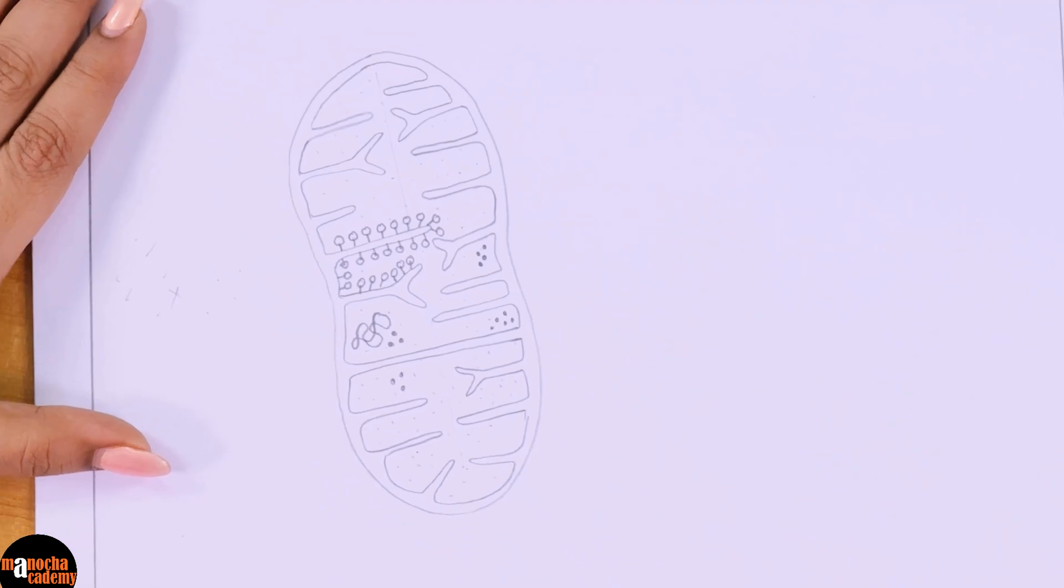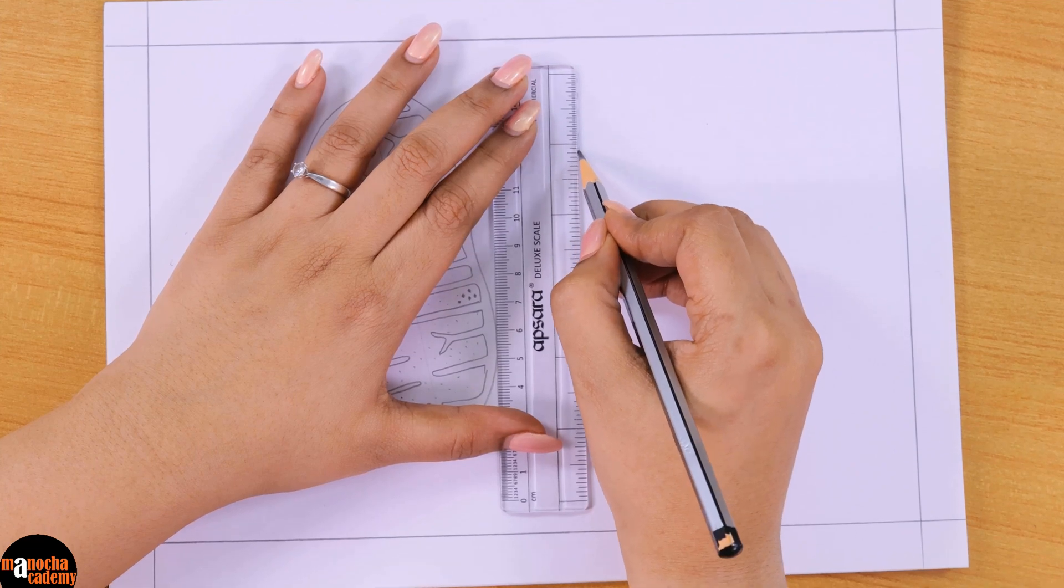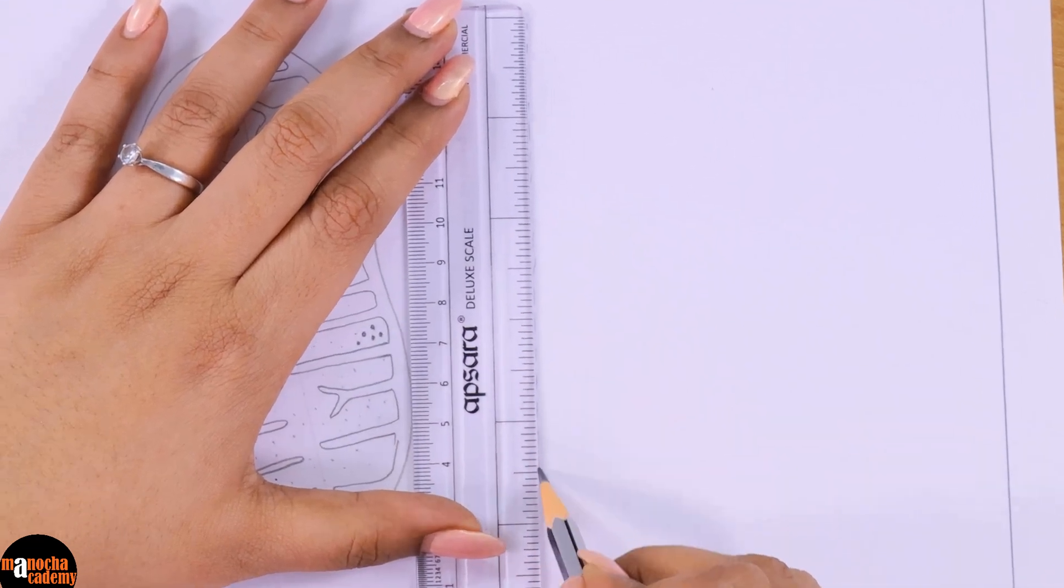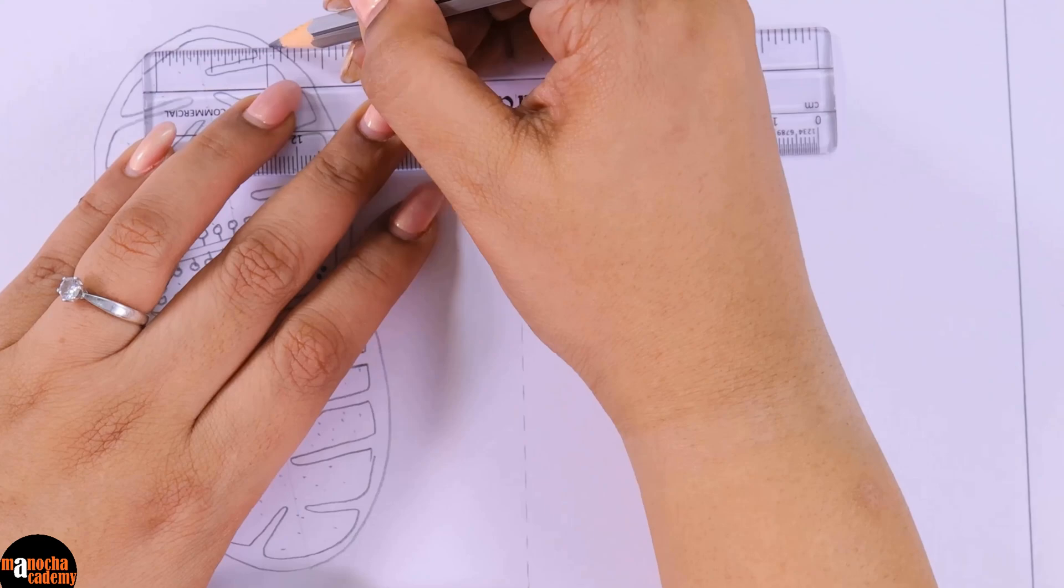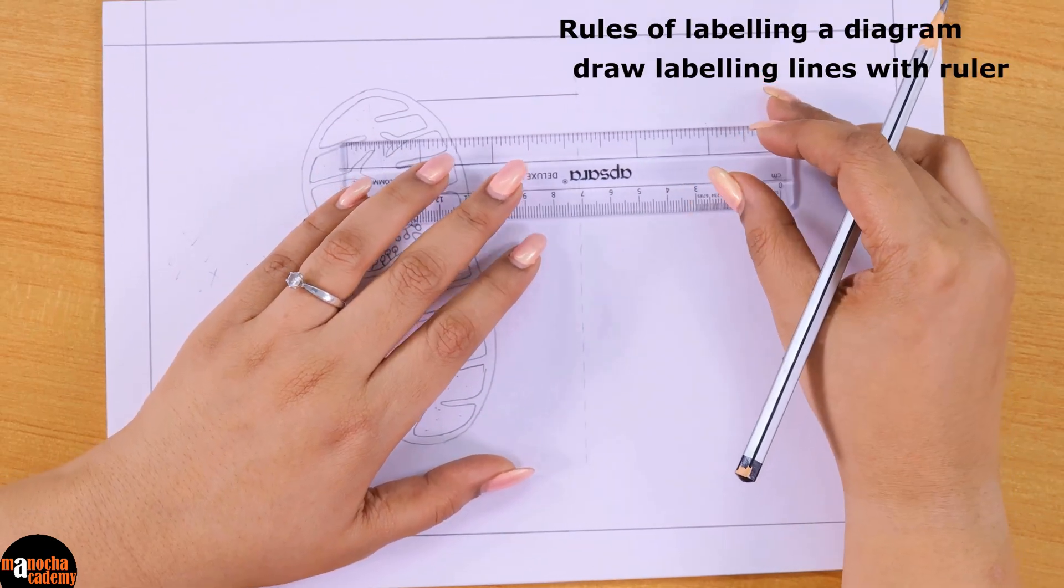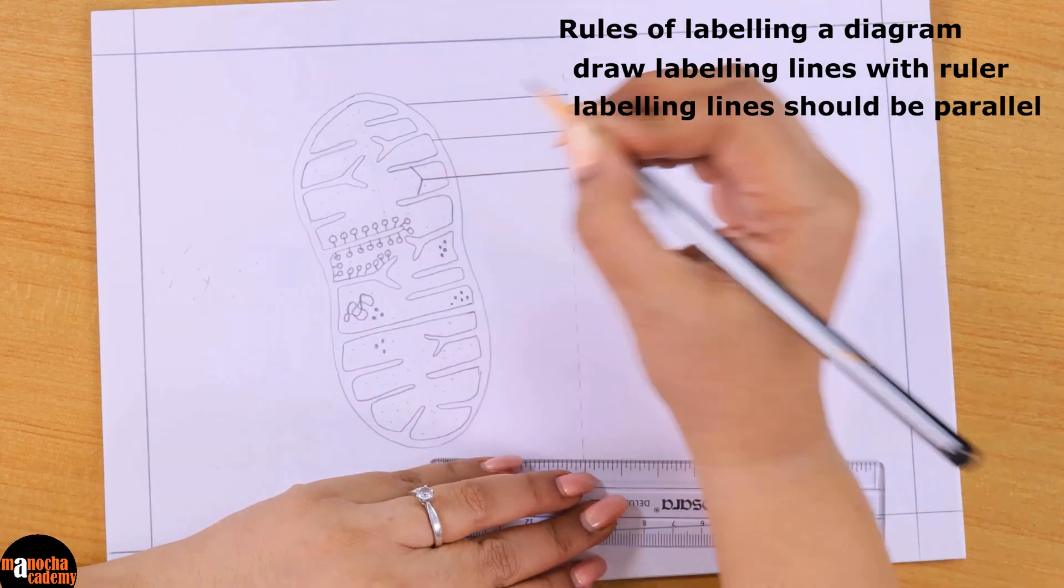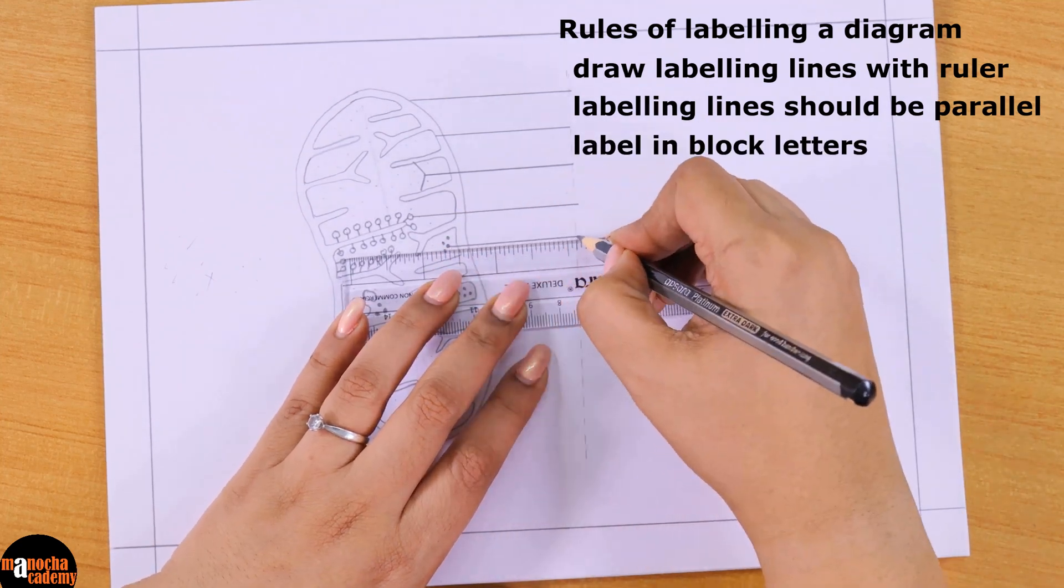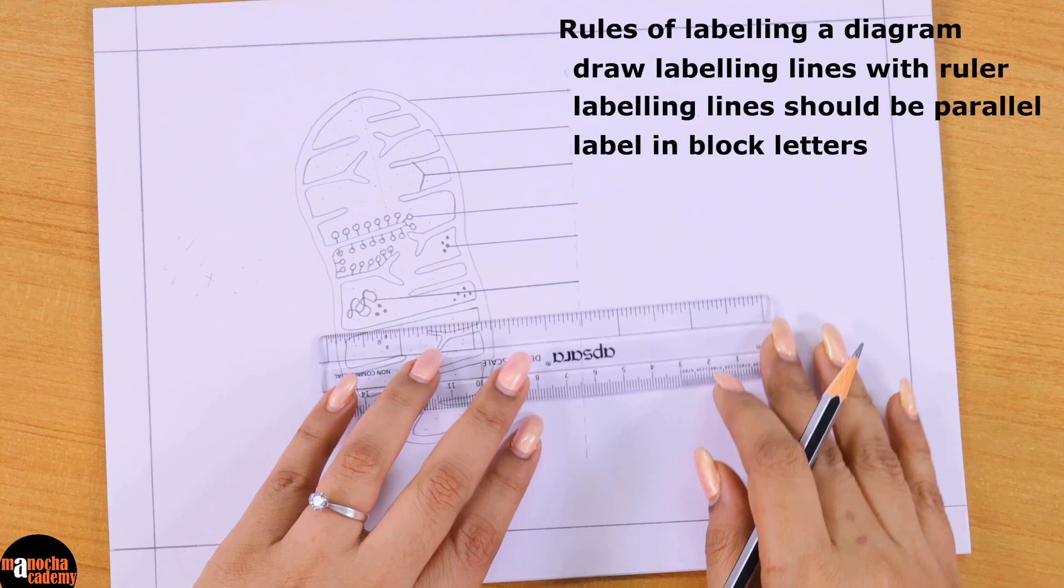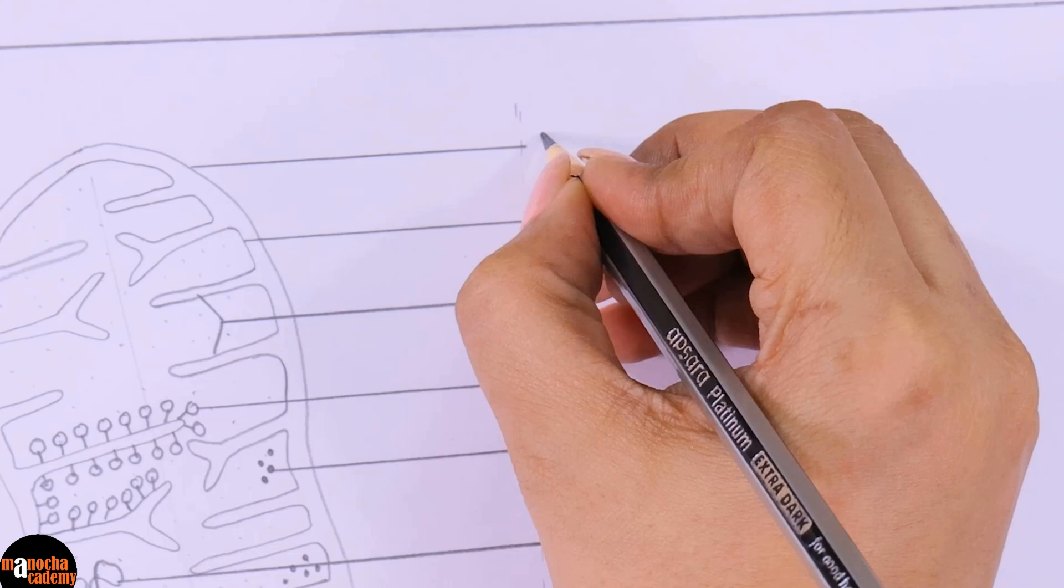Now let us label this. We will remember the rules of labeling: the lines for labeling should be drawn with the ruler and not freehand, and the lines should be parallel to each other. Everything should be labeled in block letters. This is the outer membrane.